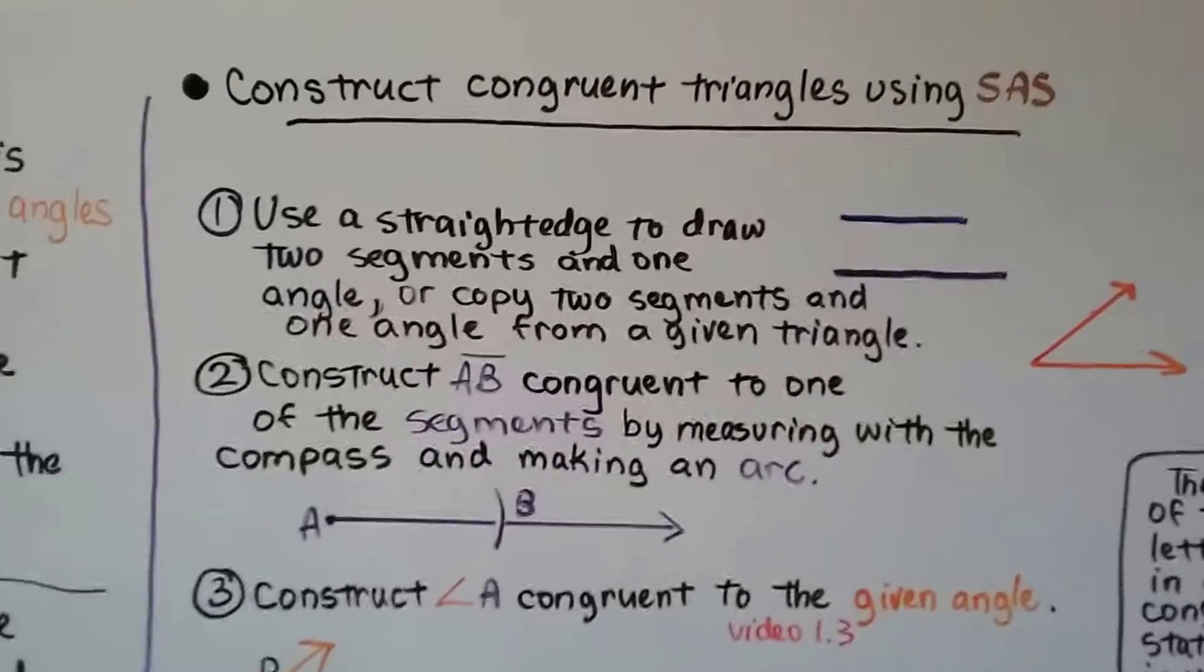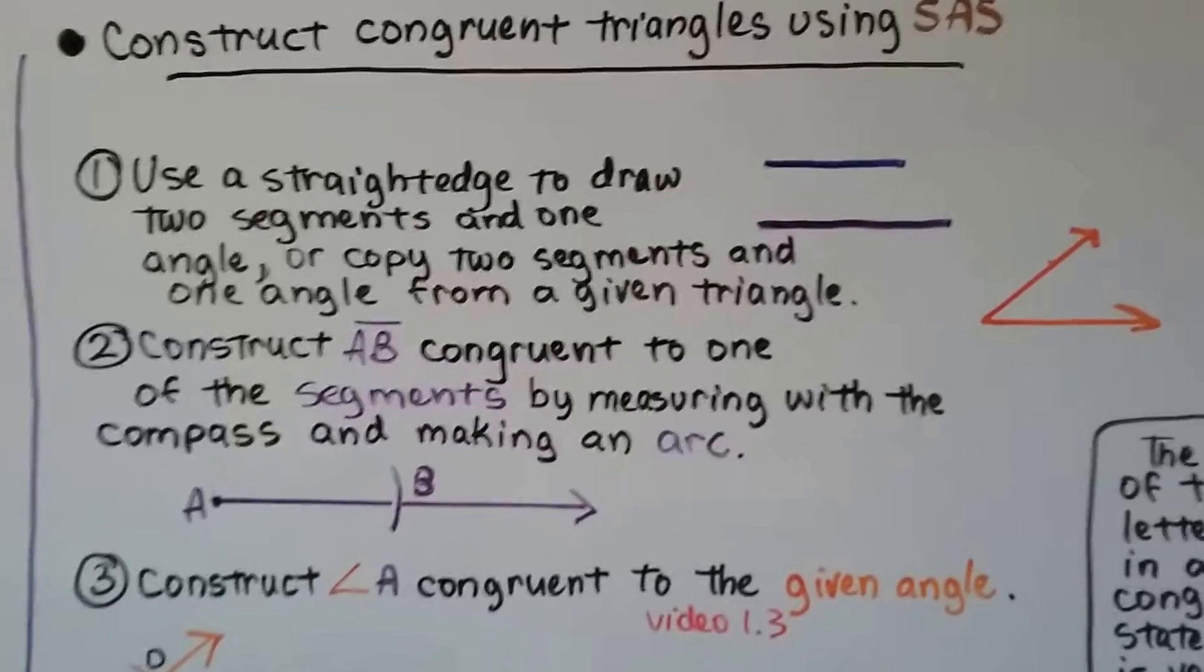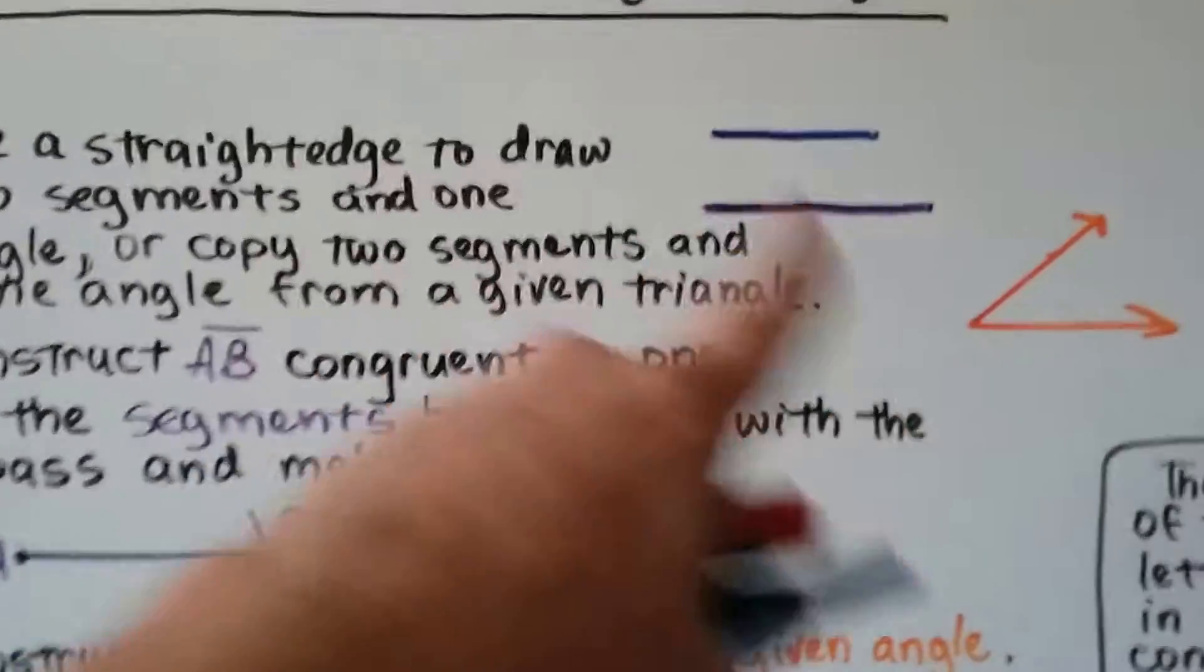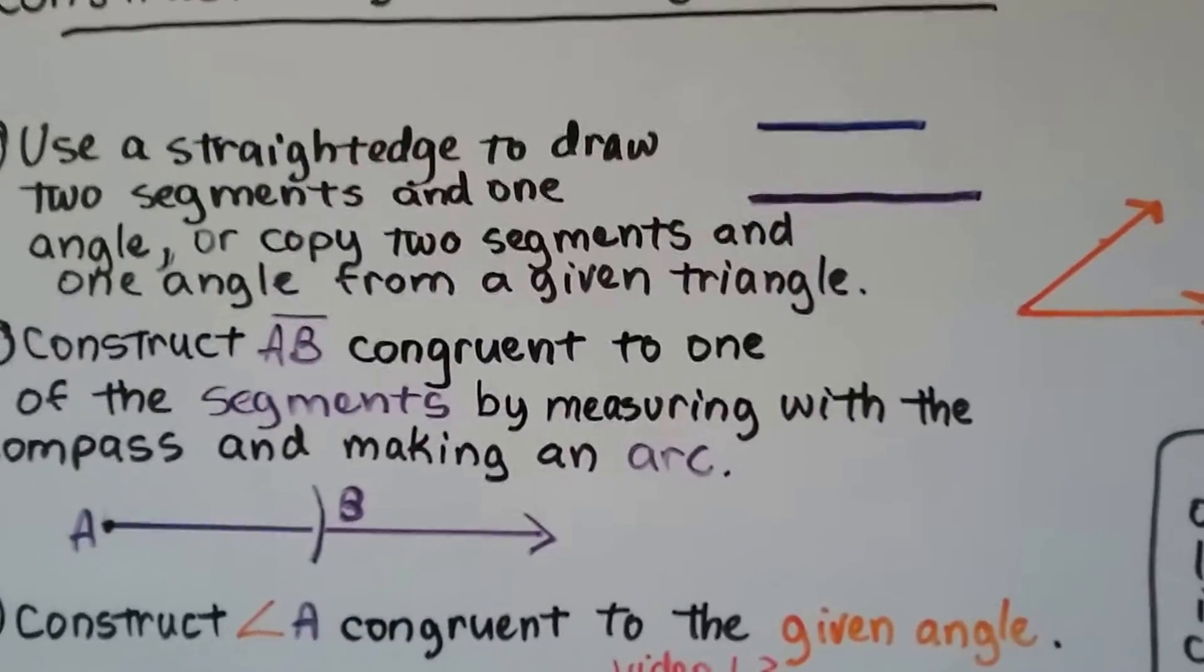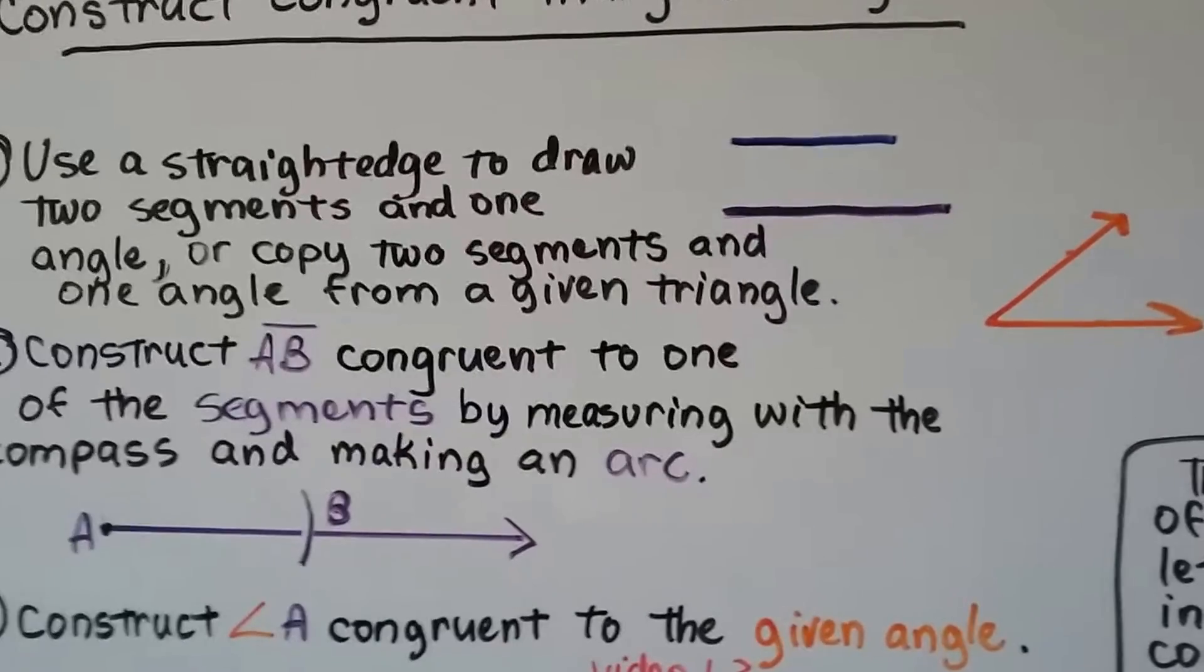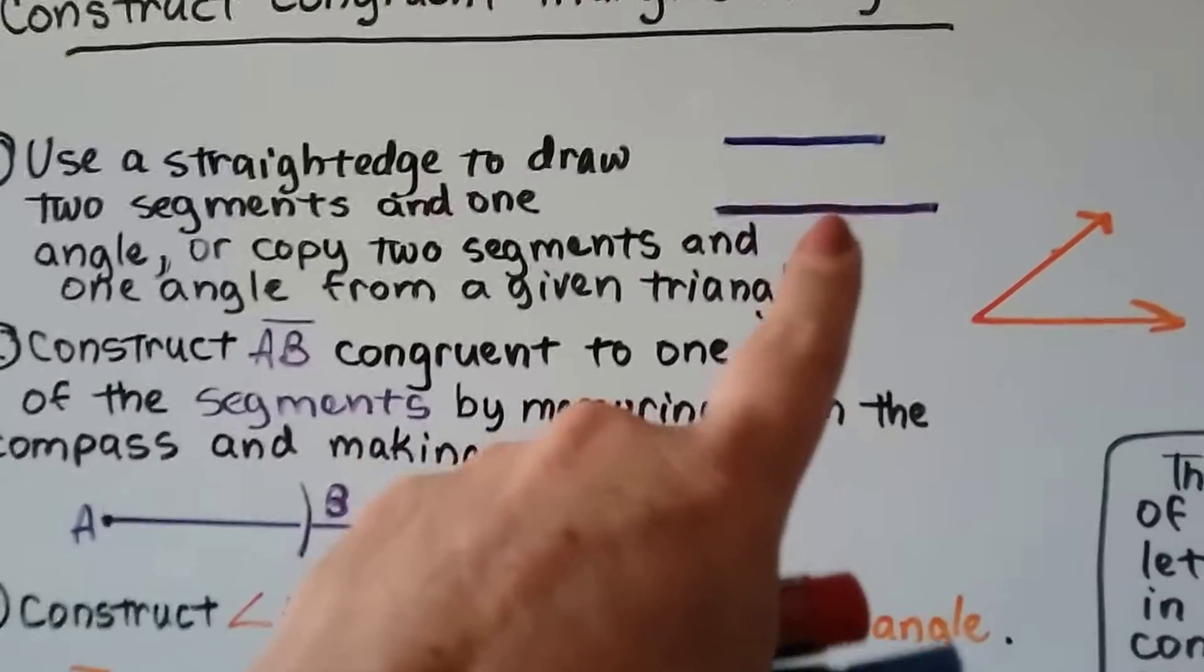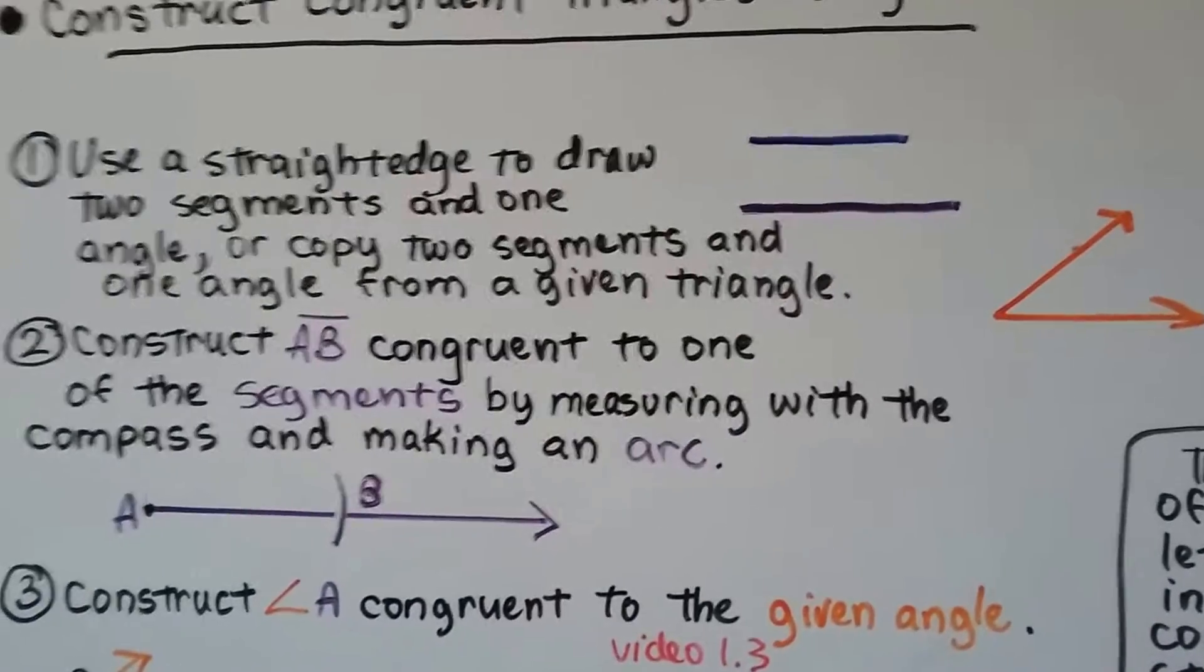We can construct congruent triangles by using side angle side. First thing we're going to do is use a straight edge to draw two segments and one angle from a given triangle. In this case, I just drew two segments of different lengths and I made an angle.